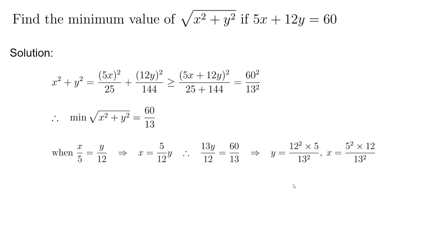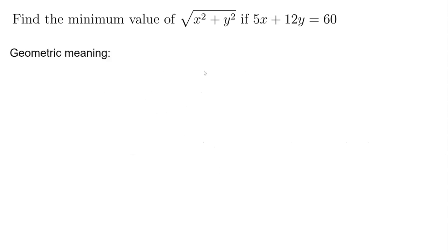Okay all of this is pretty straightforward with the help of that Cauchy's inequality. Last but not least we want to actually explain this problem. This problem actually has a very clear geometric meaning so if you plot the condition so 5x plus 12y equals to 60 is just a straight line here.